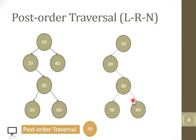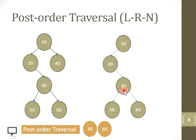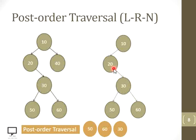Return back to 30 and move to its right child — yes, it is present. Step down to 60 and make it the root node. Check whether 60 has a left child — no. A right child — no. So process 60. Return back to 30 — as we have processed its left child and right child, it is now the turn to process root node 30. After processing 30, return back to 20. We have done with its left child and right subtree, so process root node 20.